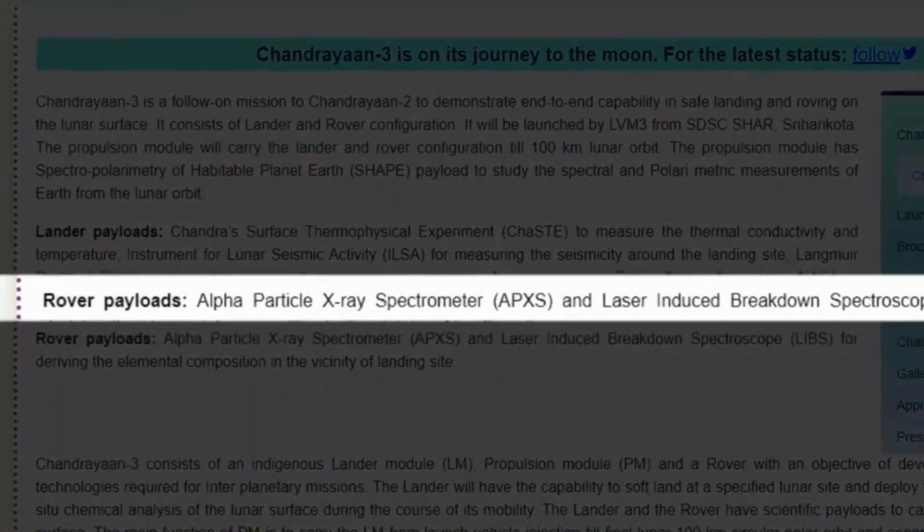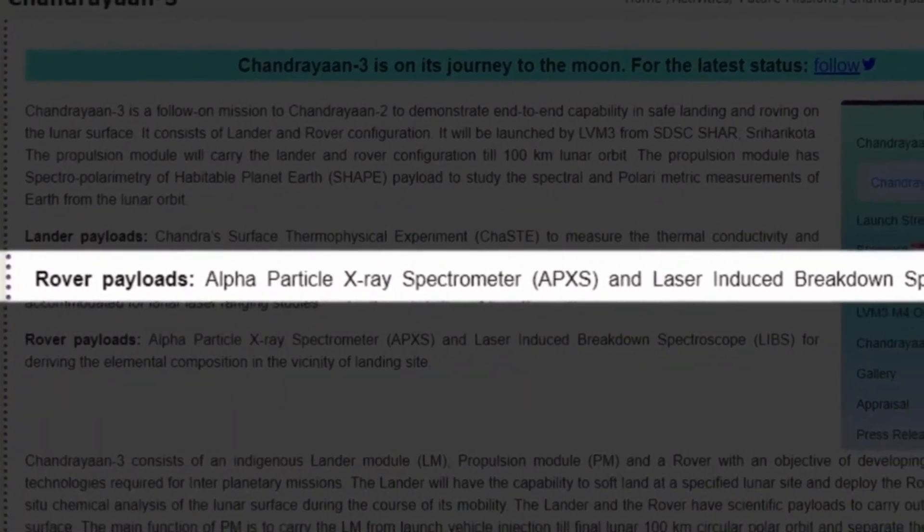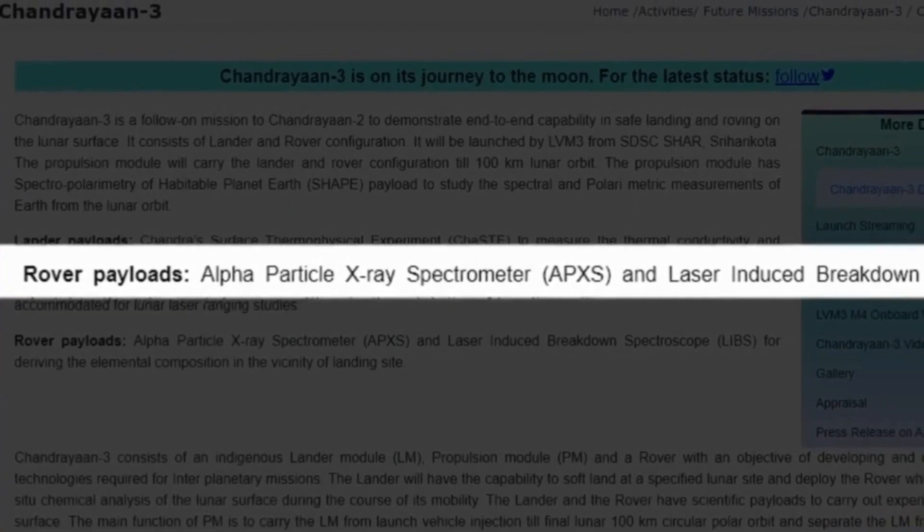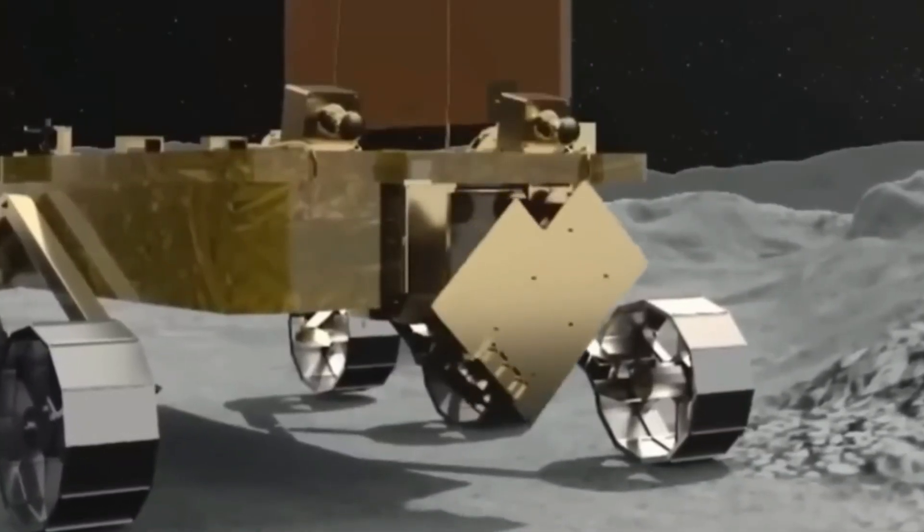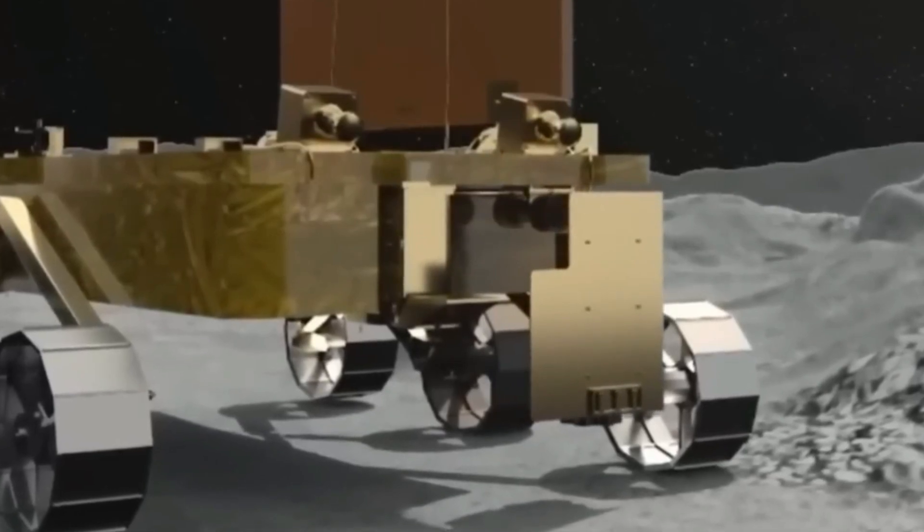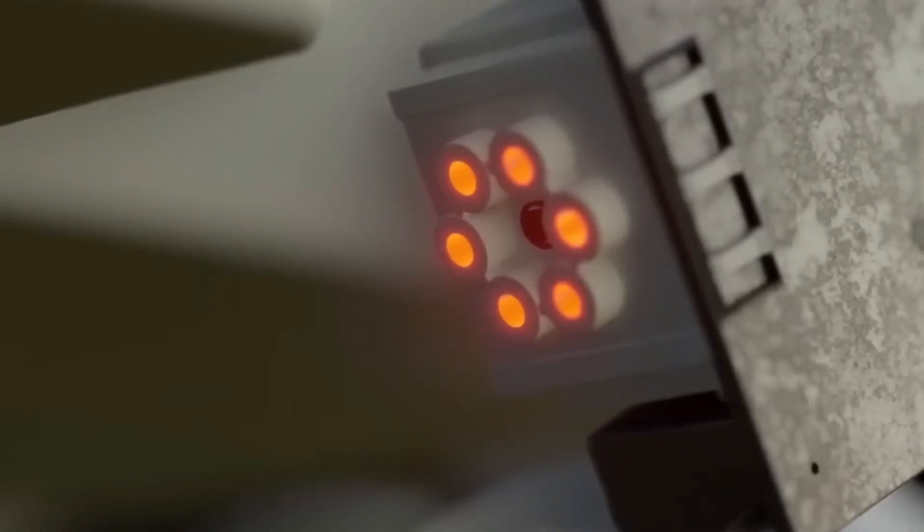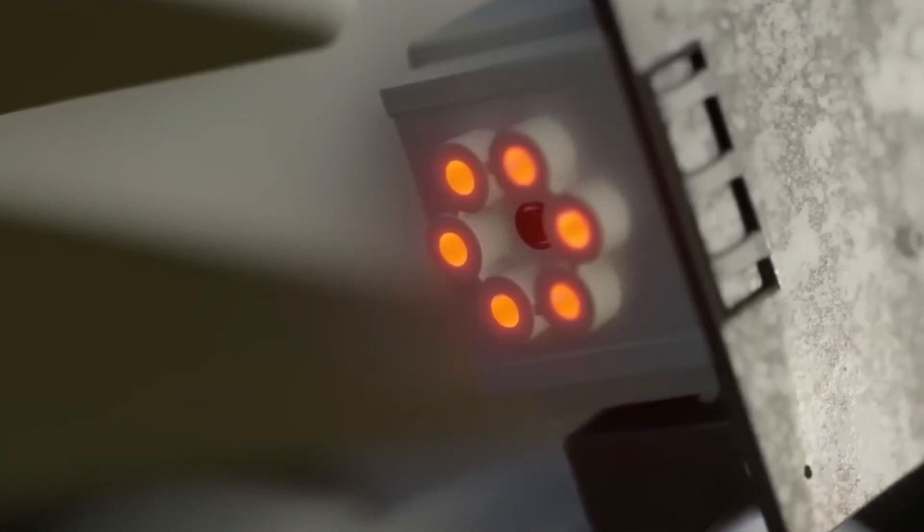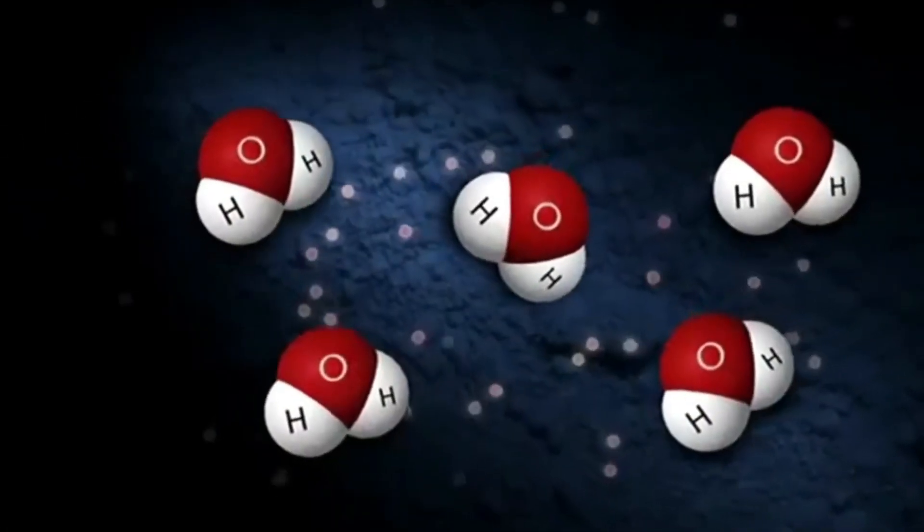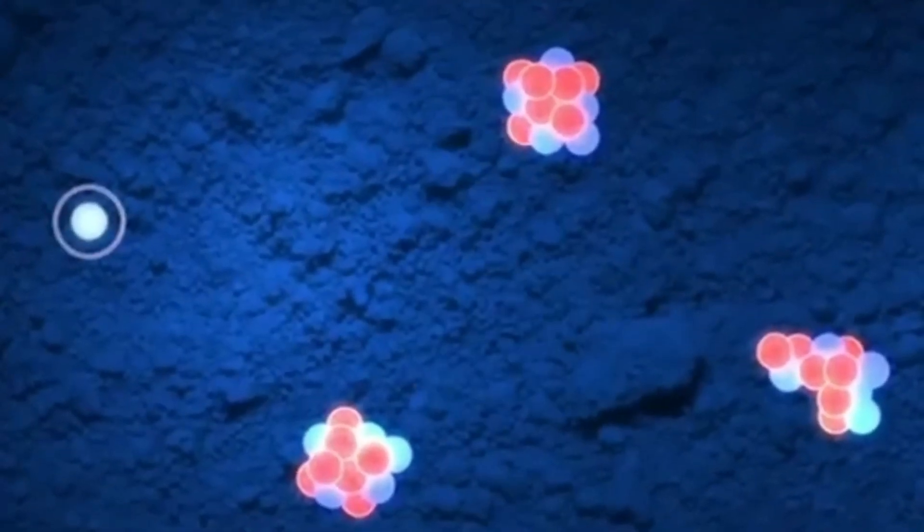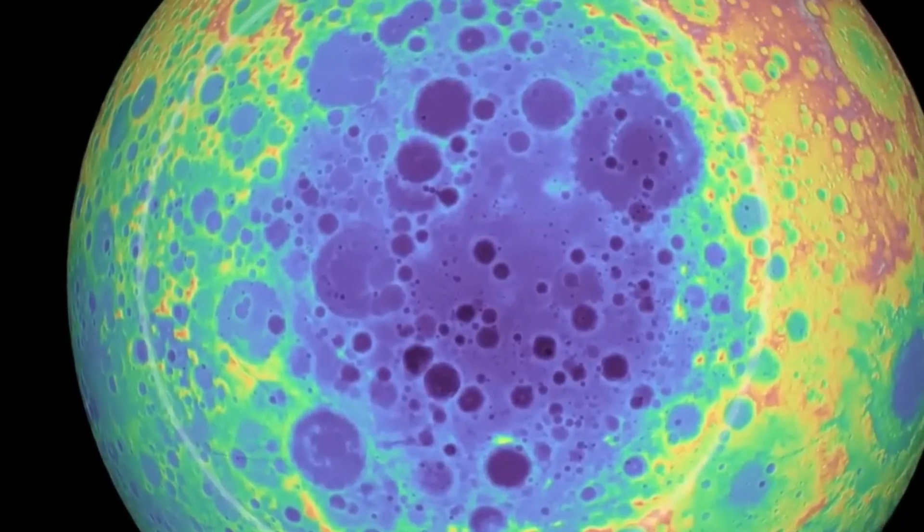APXS. This payload analyzes the chemical composition of lunar rocks and soil using X-ray fluorescence spectroscopy. It can detect elements such as iron, magnesium, silicon, calcium, titanium, aluminum, and chromium. APXS has revealed that the lunar south pole has a different mineralogy than other regions of the moon, suggesting a different geological history.